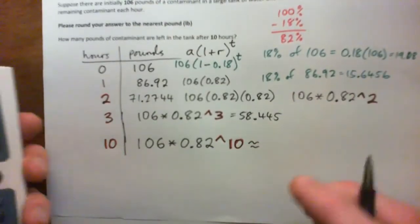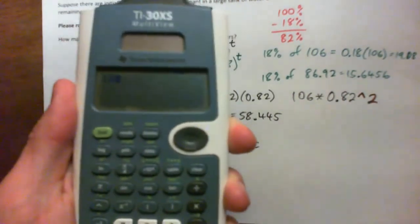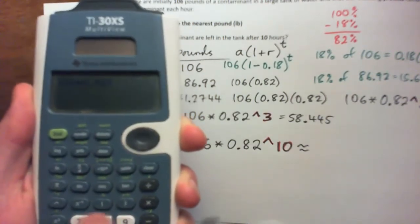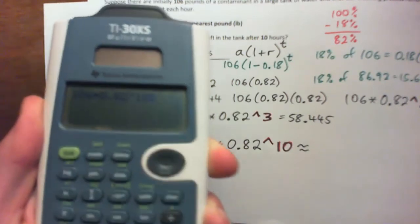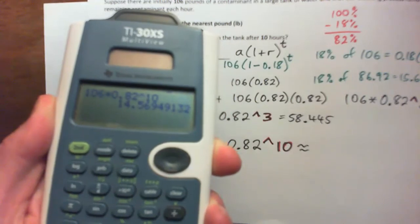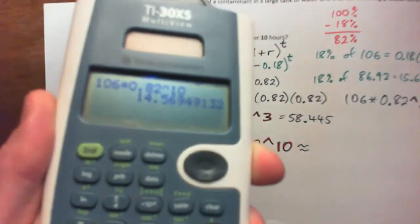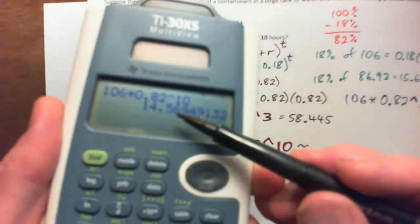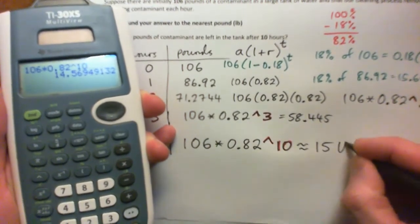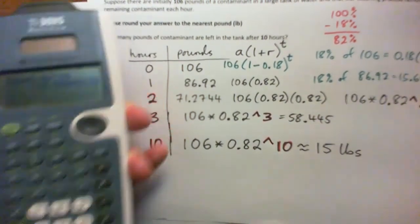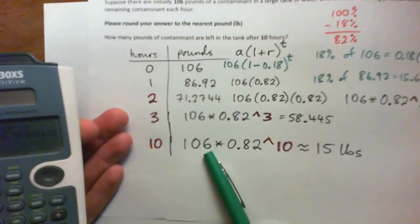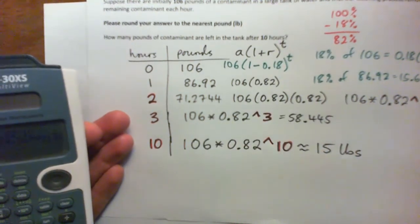And that's our formula, that's how we get what's left after 10 hours, and round your answer to the nearest pound. So let's plug that in the calculator. So we got 106 times 0.82 to the power of 10. And we get 14.569. I'm going to round that up to 15. Because look, there's a 14.5, so the five rounds up. So that should be rounded up to 15, 15 pounds. So after 10 hours, we went from 106 pounds of contaminant in the tank to 15 pounds. Not too bad. Wouldn't drink it though, would you?